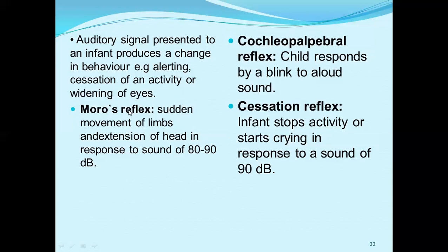In BOA there are three types of reflexes. First, the Moro reflex — a sudden movement of the limbs and head in response to sounds of 80 to 90 dB. Second, the cochleo-palpebral reflex — the child responds by blinking to loud sounds. Third, the sucking reflex — in which an infant around 6 months old alters their breathing pattern in response to sounds at 90 dB.